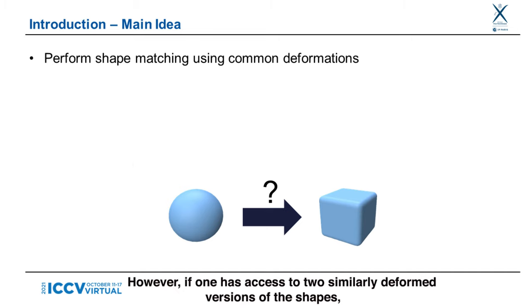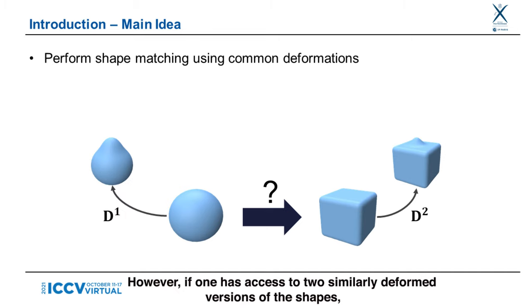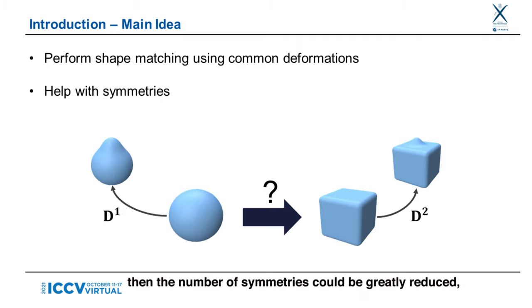However, if one has access to two similarly deformed versions of the shapes, then the number of symmetries could be greatly reduced, as the bumps should be mapped accordingly.